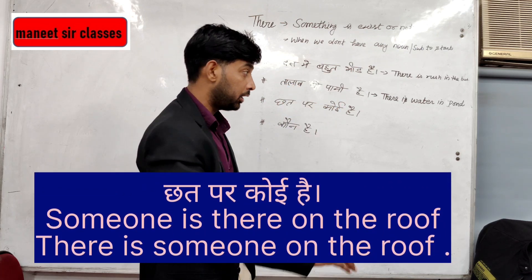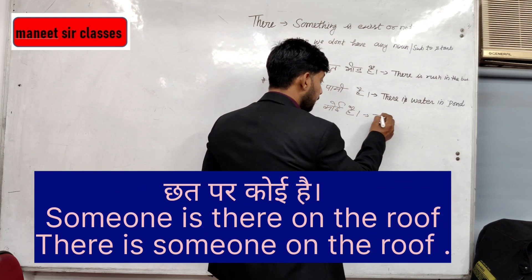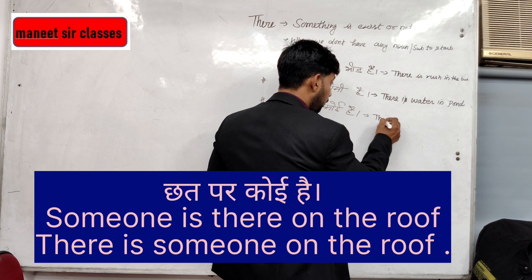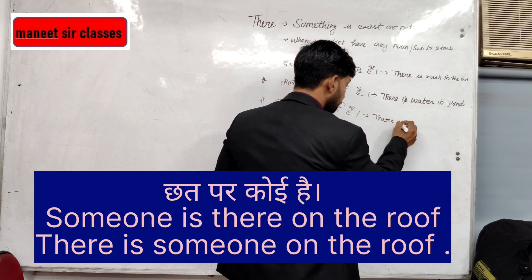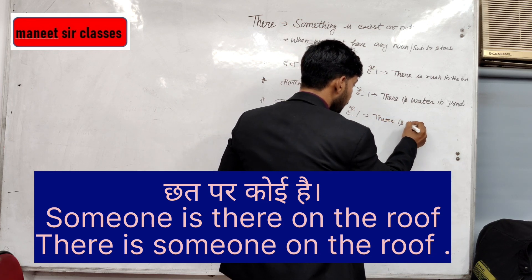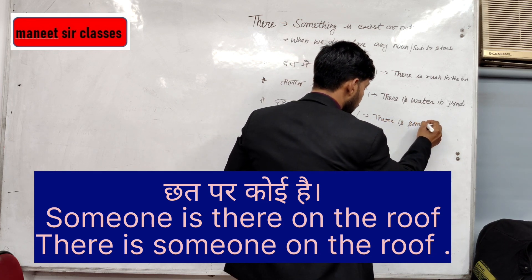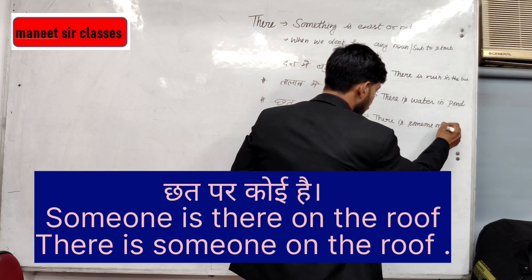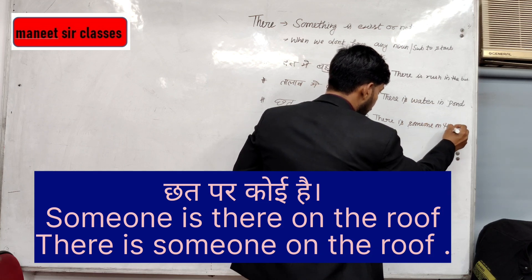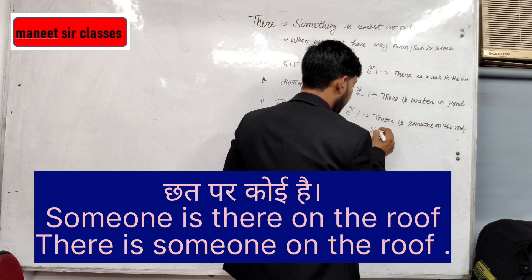Meaning: talaab mein paani hai. Next: 'chhat par koi hai' - someone is on the roof. I can say this in two ways: 'There is someone on the roof' or 'There is someone on the terrace' or 'Someone is there on the roof.'